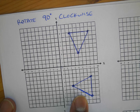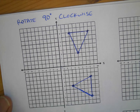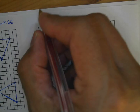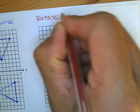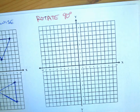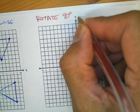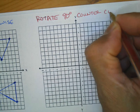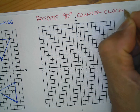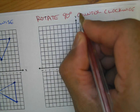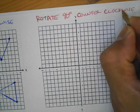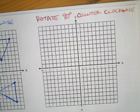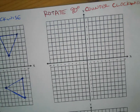Let's do one rotating counterclockwise — it's very similar. Rotate 90 degrees counterclockwise. Some people like to write CCW for counterclockwise and CW for clockwise. But for this one I'm going to use a different shape.